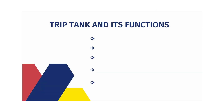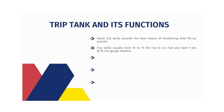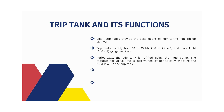Moving on to trip tanks and their functions. Small trip tanks provide the best means of monitoring hole fill-up volume. Trip tanks usually hold 10 to 15 barrels and have one barrel gauge markers. Periodically, the trip tank is refilled using the mud pump. The required fill-up volume is determined by checking the fluid level in the trip tank.